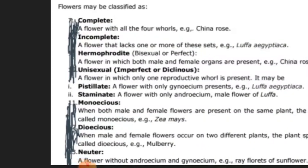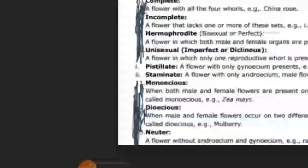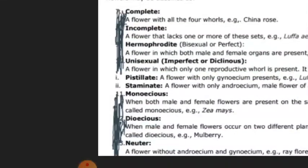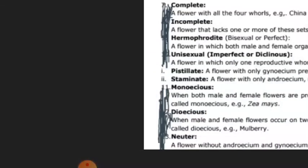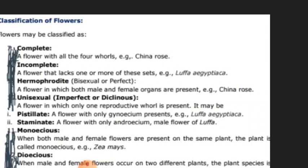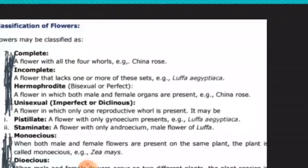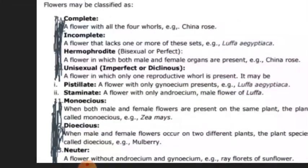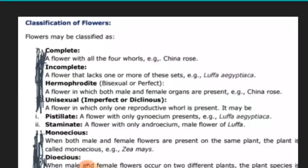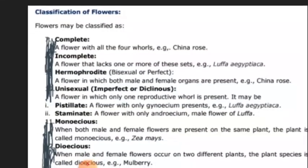Incomplete: a flower that lacks one or more of these whorls — that means there is a lack of one or two of these whorls — is known as an incomplete flower. That means either sepalous, petalous, androecium, or gynoecium, either of them is lacking, that is known as an incomplete flower. Such a condition is found in some flowers, and when any of these four whorls — one or more — are lacking or absent, such a condition is known as an incomplete flower.